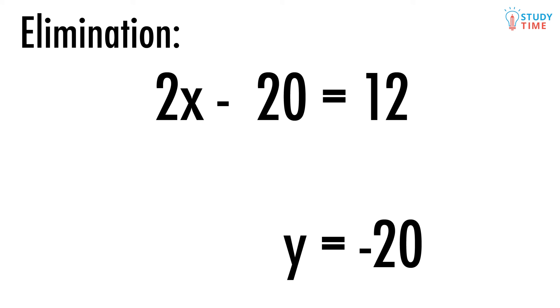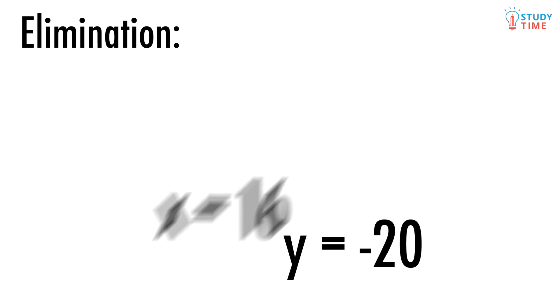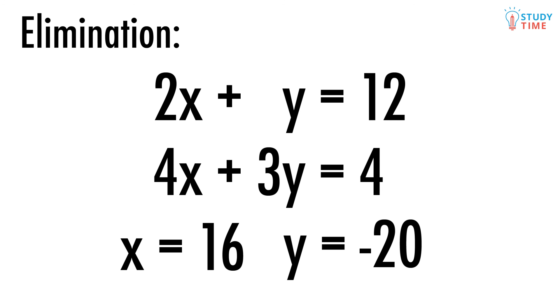And now we solve for that mysterious x value. Remember BEDMAS, division comes before subtraction. We divide both sides by 2 giving x minus 10 equals 6. Then we add 10 to both sides so that x equals 16. There we have it. The two equations are both true when x equals 16 and y equals negative 20.